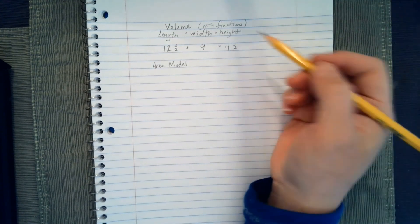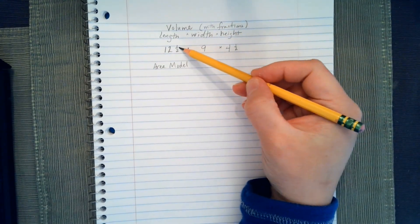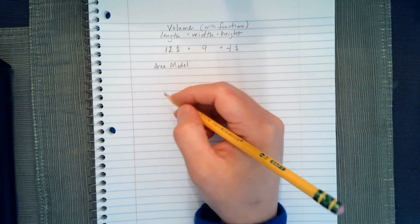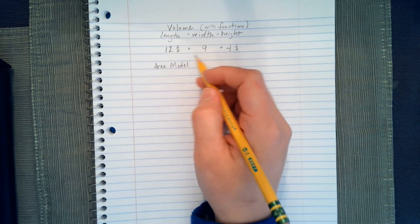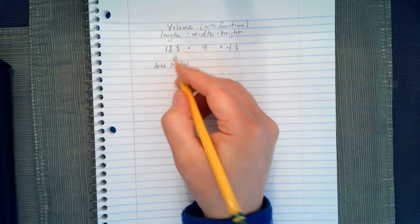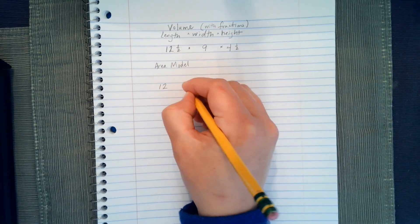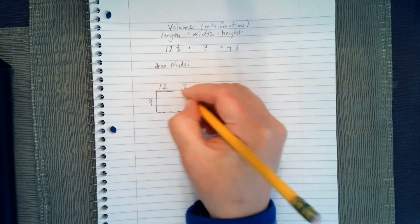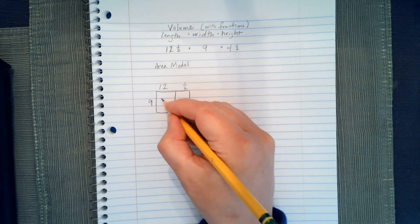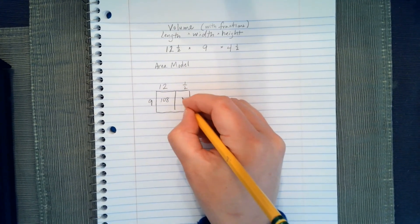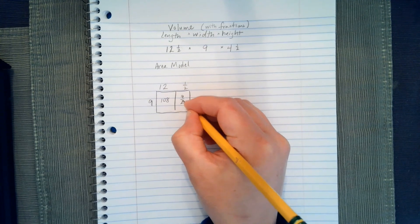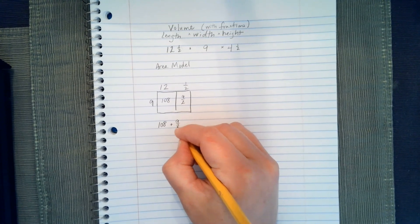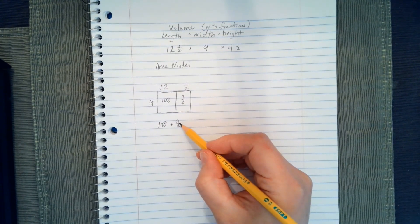Okay, let's say that you don't have whole numbers for all of your measurements, you do have some fractions, we're going to use the area model like we've been using to find the area of all our sides, and applying it to finding volume. I'm going to take 12 and a half, and I'm going to split it up into 12 and 1 half, and I'm going to multiply it by 9. 9 times 12 is 108. 9 times 1 half is 9 halves. I'm going to add 108, plus 9 halves.